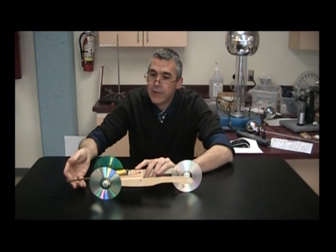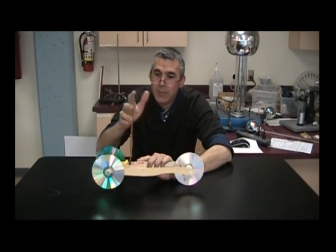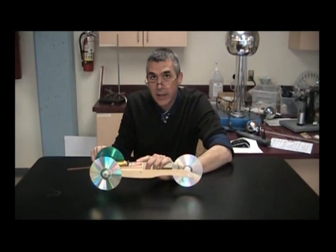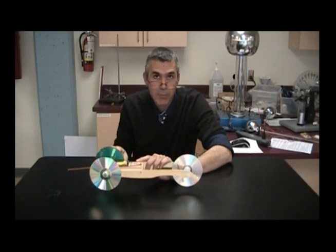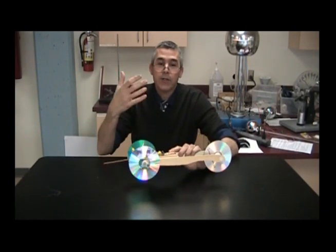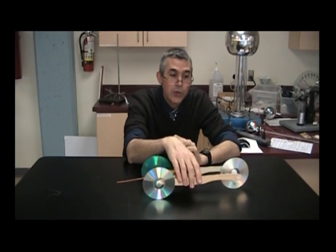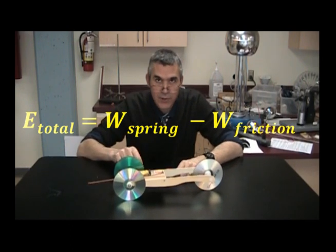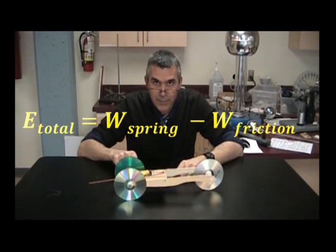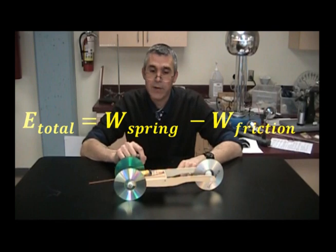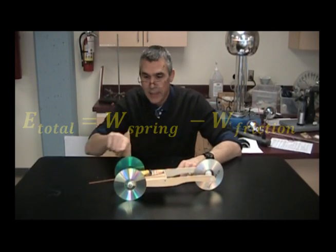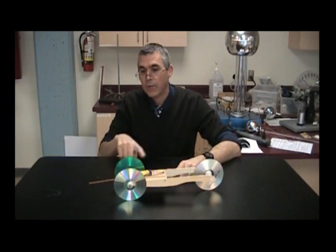So where does that total energy come from? We have the energy of the spring as delivered by the mousetrap — it does work on the car and gives it energy — but we also have the negative work done by friction. So the total energy of the car should be the work done by the spring minus the work done by friction, which gives the combination of linear kinetic energy and rotational energy.